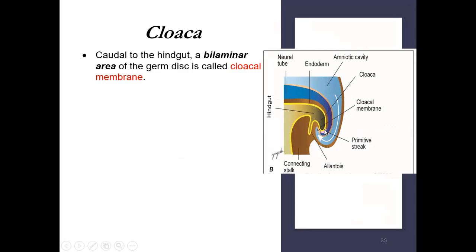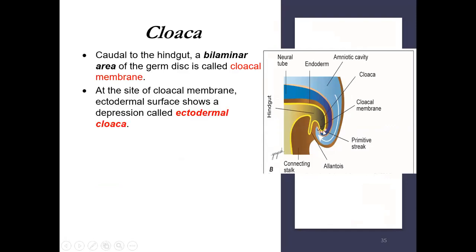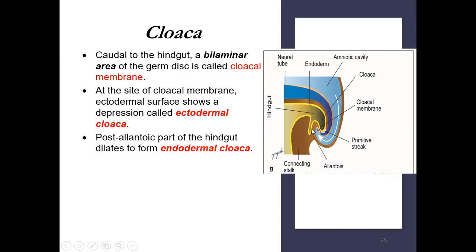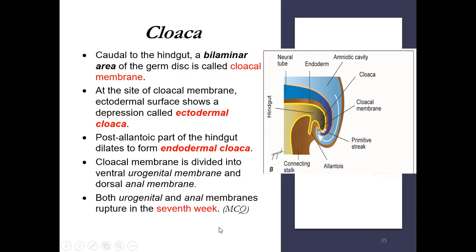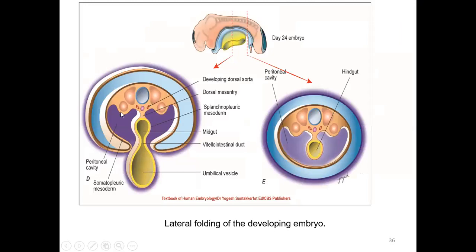The cloacal membrane is a bilaminar area of the germ disc caudal to the hindgut. At the site of the cloacal membrane, the ectodermal surface shows a depression called the ectodermal cloaca. The post-allantoic part of the hindgut dilates to form the endodermal cloaca — the part above is endodermal in origin and the part beneath is ectodermal. The cloacal membrane is divided into a ventral urogenital membrane and a dorsal anal membrane; both rupture in the seventh week of intrauterine life.